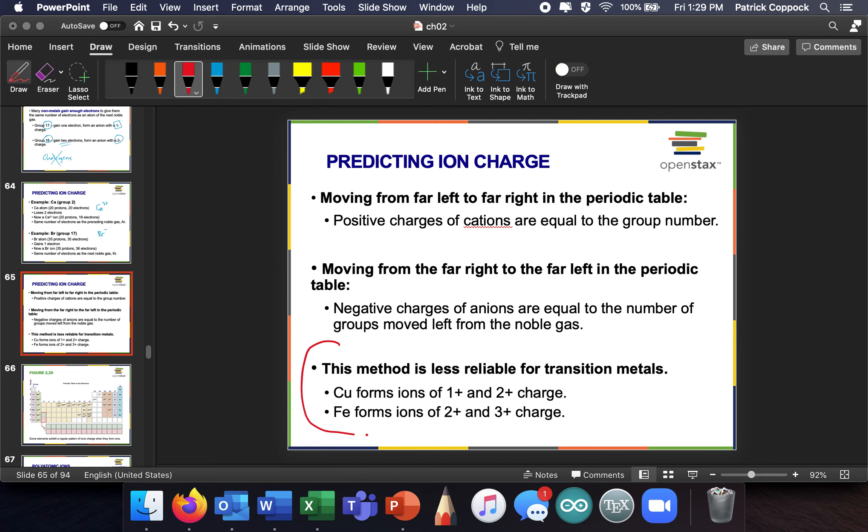And in here you can see there's no real trend. Plus three, plus six, plus two. Iron can be plus two or plus three. Cobalt, plus two. Nickel, plus two. What? So you really can't make predictions about the stuff in the middle. You make predictions about these groups and these groups.